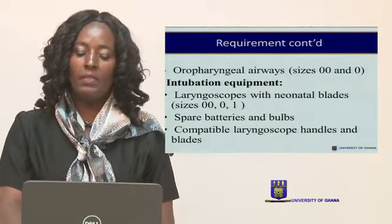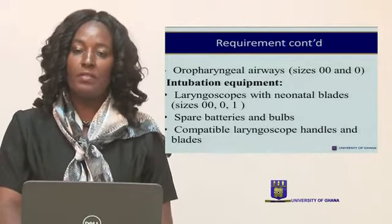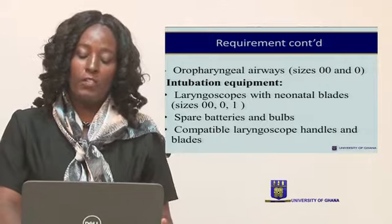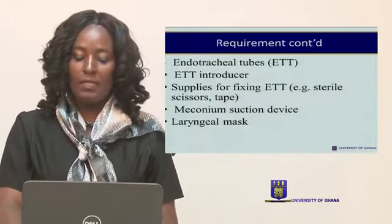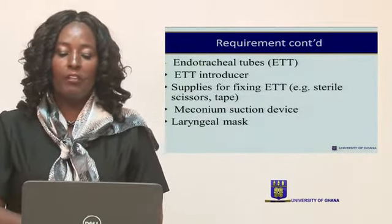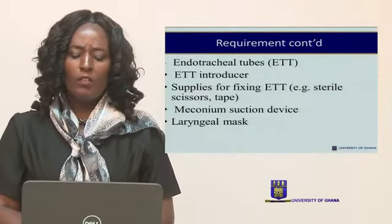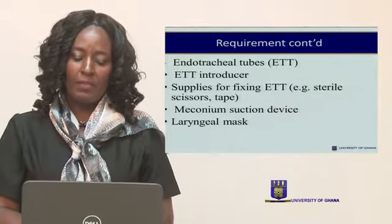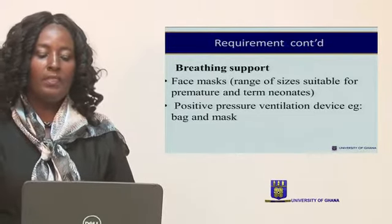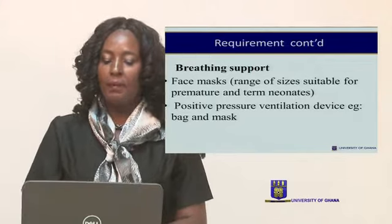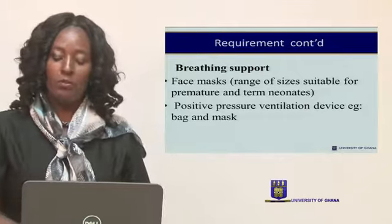For airway management you need suction apparatus, an oropharyngeal airway, and for intubation you need a laryngoscope with spare batteries, ensuring it is in good shape. You may also need an endotracheal tube for intubation and a suction apparatus. For breathing support, you need a face mask and bag for positive pressure ventilation.